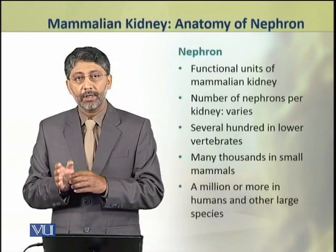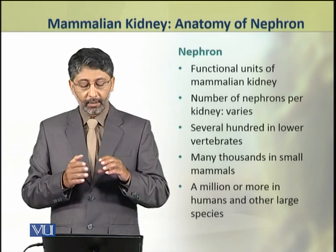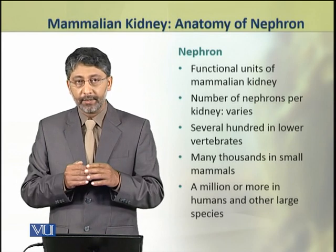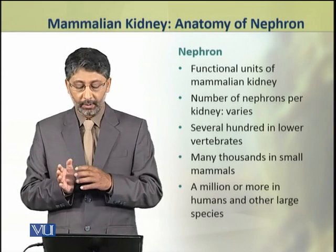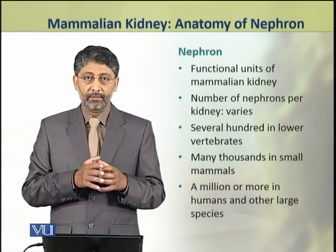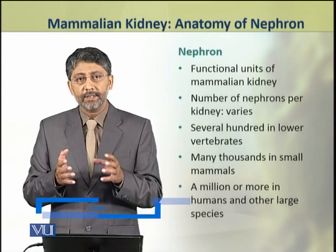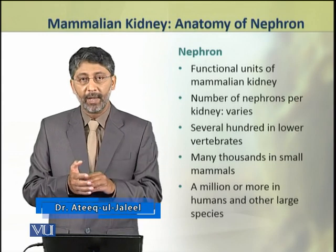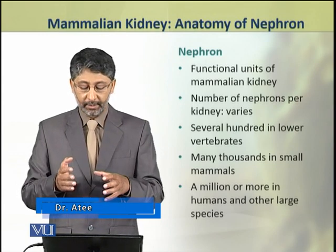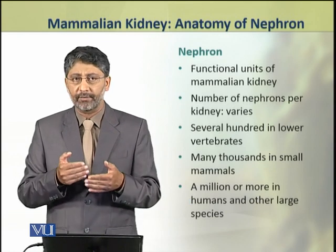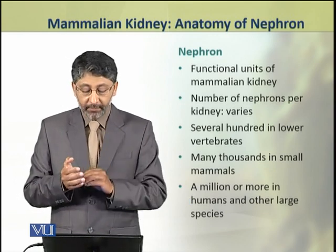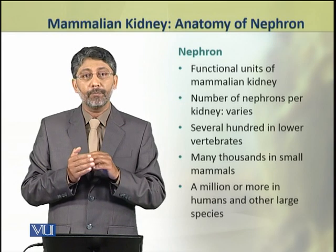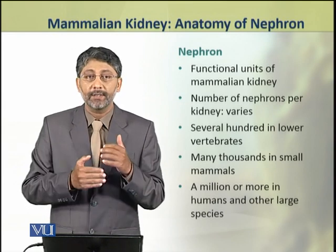Nephrons are the functional units of the kidney. The number of nephrons in the kidneys of vertebrates varies. In lower vertebrates, each kidney has only several hundred nephrons. While in many small mammals, the number of nephrons is in the thousands. In humans and other large mammals, one kidney has more than 1 million nephrons.